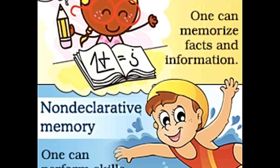Explicit or declarative memory, as its name suggests, declares events as they are. It helps us narrate an event or a particular piece of information without altering any of it. This type of memory is subdivided into two distinct categories: semantic memory and episodic memory.